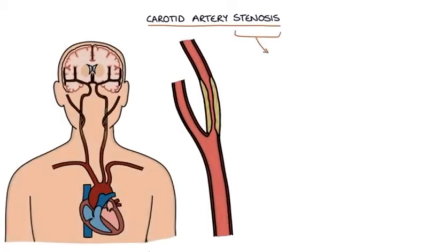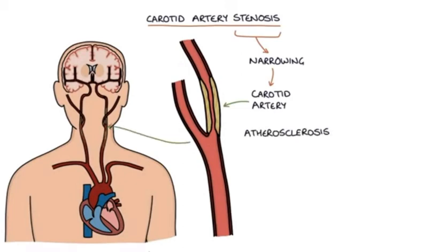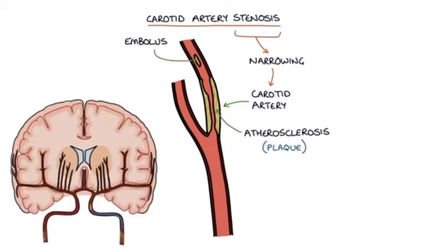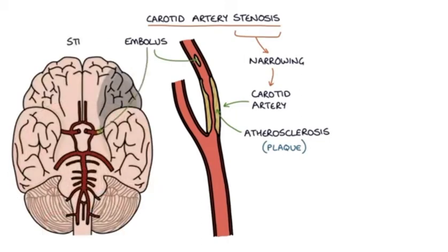Carotid artery stenosis refers to narrowing of the carotid arteries in the neck, usually secondary to atherosclerosis. Plaques build up in the carotid arteries, reducing the diameter of the lumen. There is a risk of parts of the plaque breaking away and becoming an embolus, traveling to the brain and causing an embolic stroke.